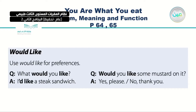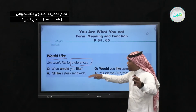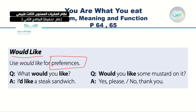Let's see what 'would like' is used for. We use it for preferences — if I have choices. So 'would you like?' means I am offering something. For example: 'What would you like?' — 'I'd like a steak sandwich.' Another example: 'Would you like some mustard on it?' — 'Yes, please' or 'No, thank you.' So I use 'what would you like' — all of these forms are correct.